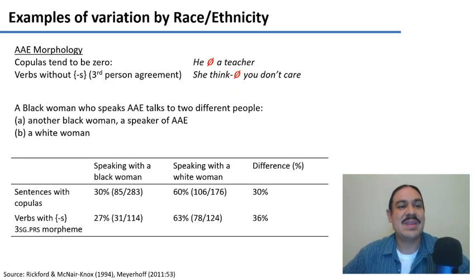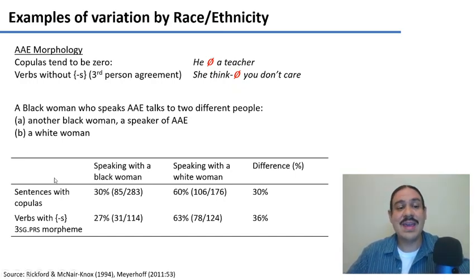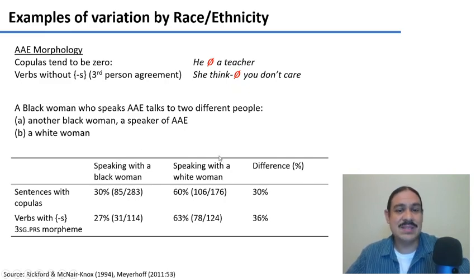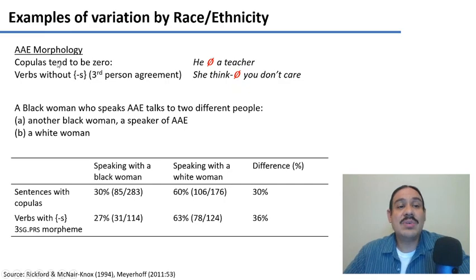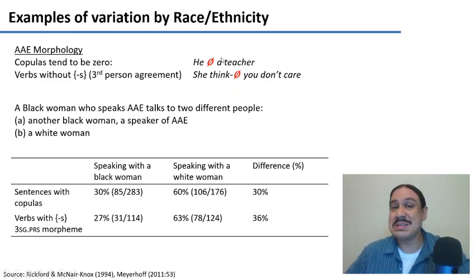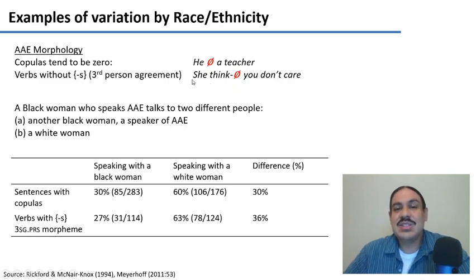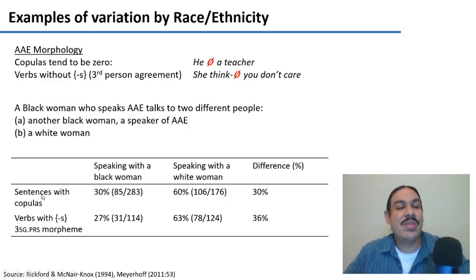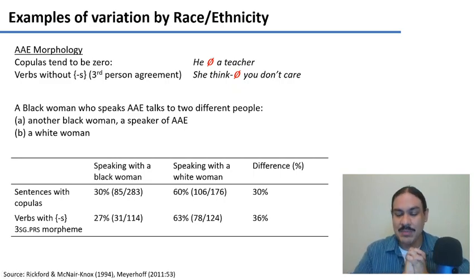Now let's switch to race. This is a very important experiment by John Rickford in the 1990s. A Black woman who speaks African-American English is speaking with two different people: another Black woman who also speaks African-American English, and a white woman who speaks standard American English. African-American English has several identifying features — for example, copulas tend to be zero, as in 'he a teacher' versus 'he is a teacher,' and verbs tend to lose their third-person agreement, as in 'she think you don't care.'